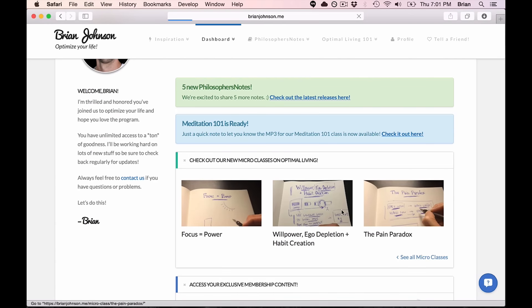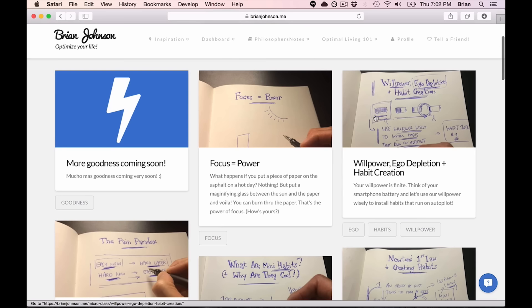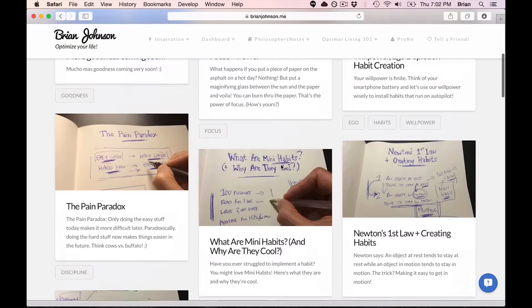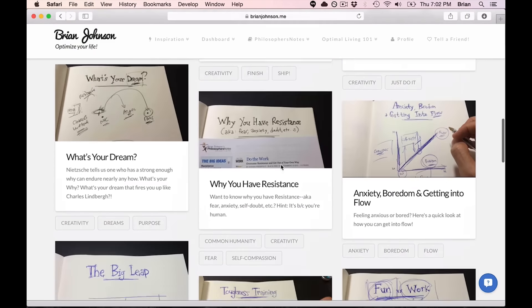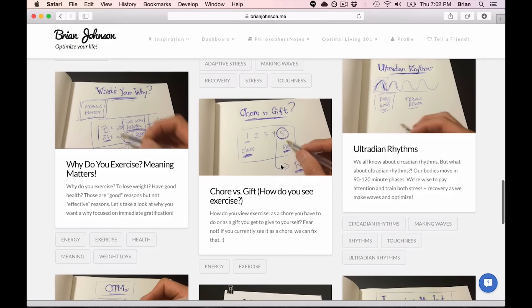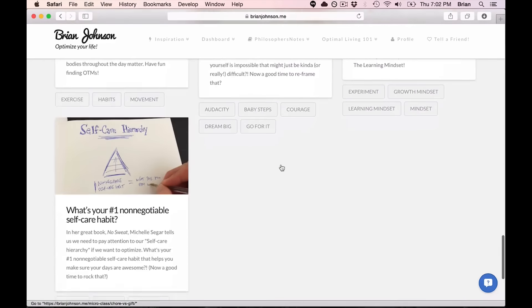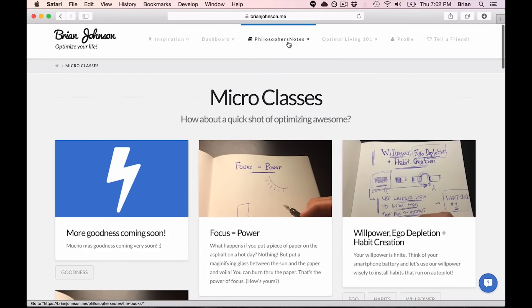I just started doing these micro classes, but I now share over 50 of these per month. We've shared dozens so far, and it's basically a quick class on my absolute favorite stuff across the different domains of optimal living—two to three, maybe five-minute little micro classes on how to optimize your life.